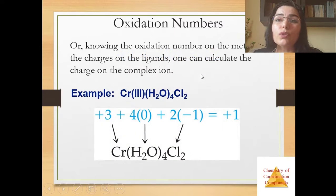Knowing oxidation number on the metal and the charge on the ligand, one can calculate the charge on the complex ion. For example in this example, oxidation number for chromium is equal to plus three, for water oxidation number zero and for chlorine minus one, and when we calculate it's plus one.